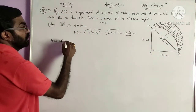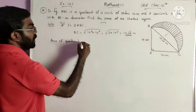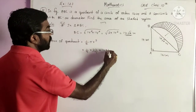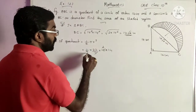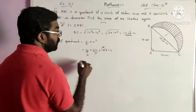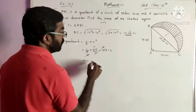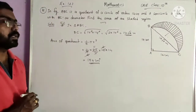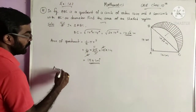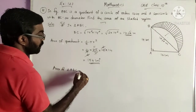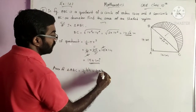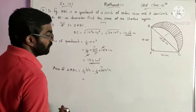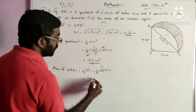Area of quadrant equals 1 by 4 pi r square: 1 by 4 into 22 by 7 into 14 into 14. Cancelling 14 and 7 gives 2, then further cancellations leave 11 into 14, giving 154 cm square. Area of triangle ABC equals half into base times height: half into 14 into 14, which gives 98 cm square.